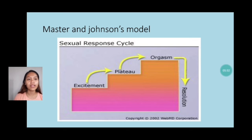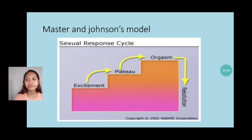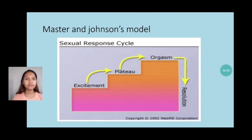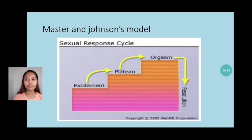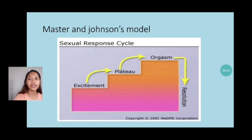Heart rate and blood pressure are increasing. Next is orgasm — the climax of the sexual response. When the man reaches orgasm, involuntary muscle contractions begin. The pressure, heart rate, and breathing are at their highest rates. Muscle tension peaks, and this sudden release relieves sexual tension. In women, the muscles of the vagina contract. In men, rhythmic contraction of the muscles at the base of the penis results in the ejaculation of semen.